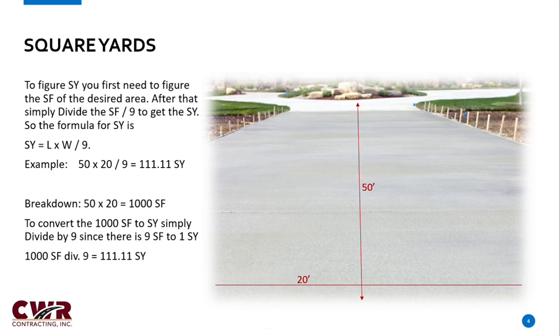Now let's expand on that a little bit. If we want to get square yards, once we have our square footage, we can now convert that to square yards. We do that by simply dividing the square footage by 9. So in this example,